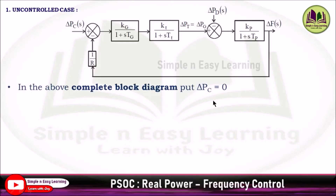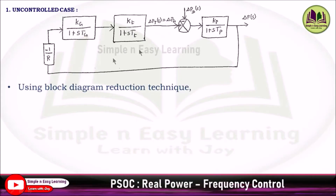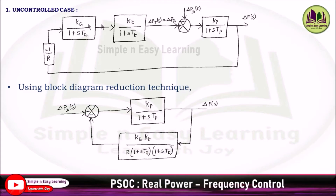In the complete block diagram, put ΔPC = 0. The block diagram is then reduced: 1/R is feeding at negative, so removing the summation point, we directly substitute −1/R into the block. This block diagram can be reduced using block diagram reduction technique, multiplying all three blocks and bringing ΔPD(s) to the left-hand side. This looks like a negative feedback system.